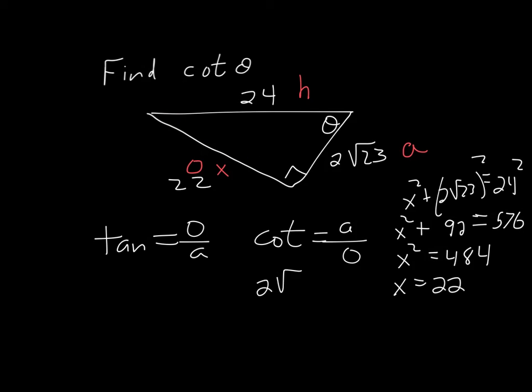2 square root of 23 over 22, which is a pretty good answer, except there's one more little thing we can do. We have a 2 and a 22 right here that could reduce to 1 over 11, so the best answer to this is square root of 23 over 11.